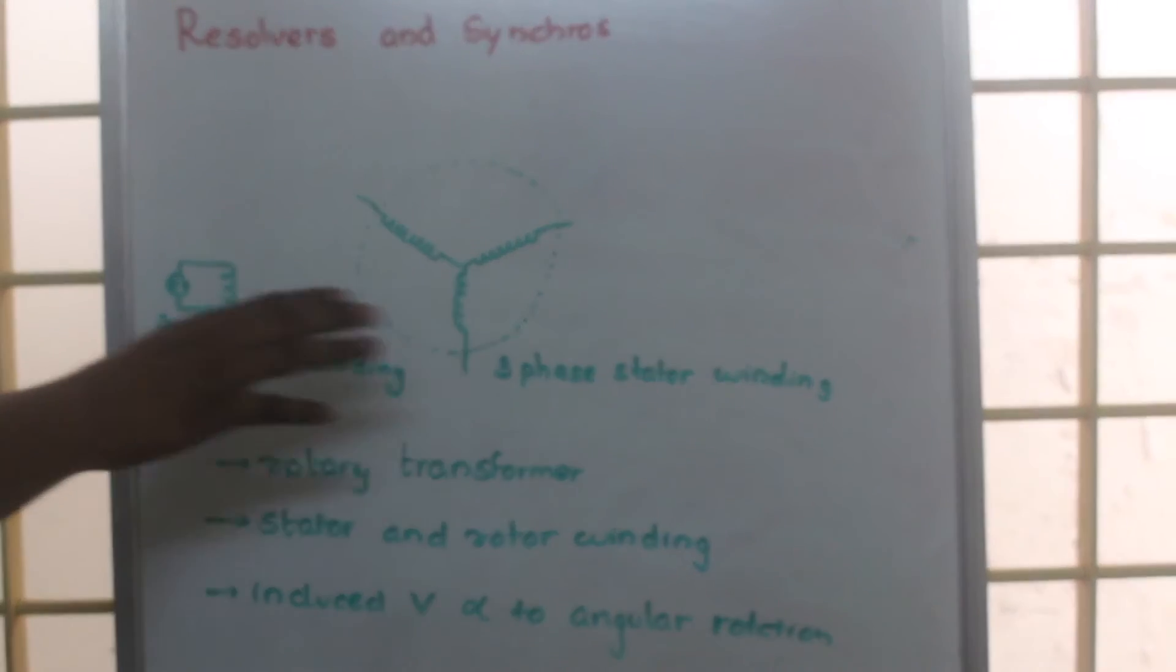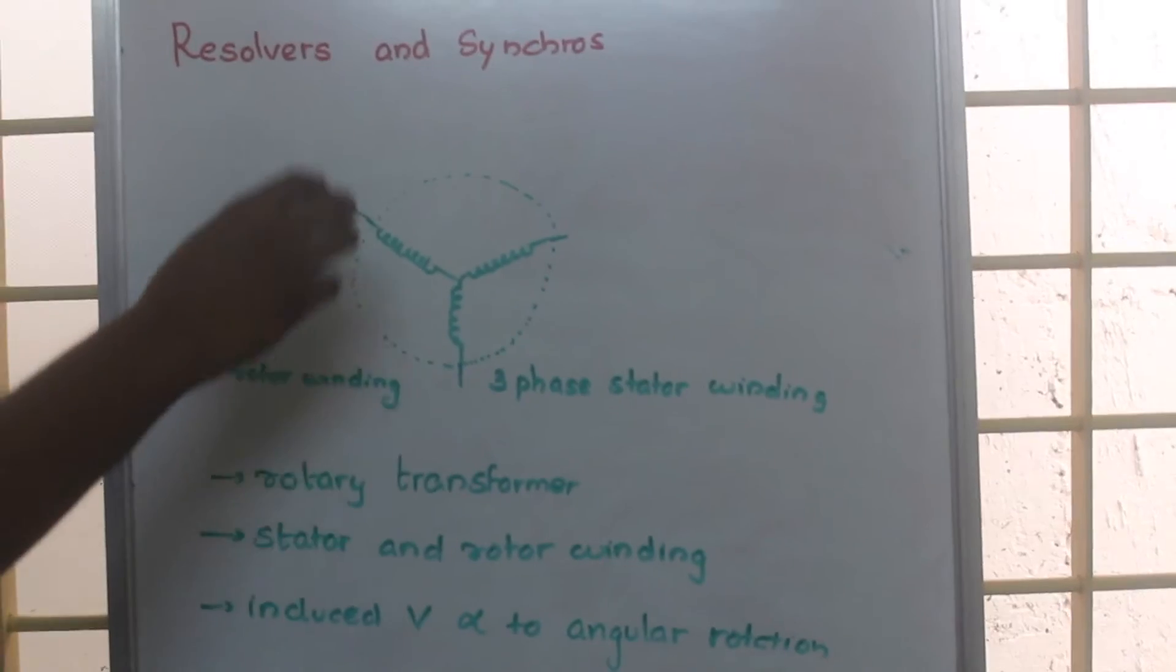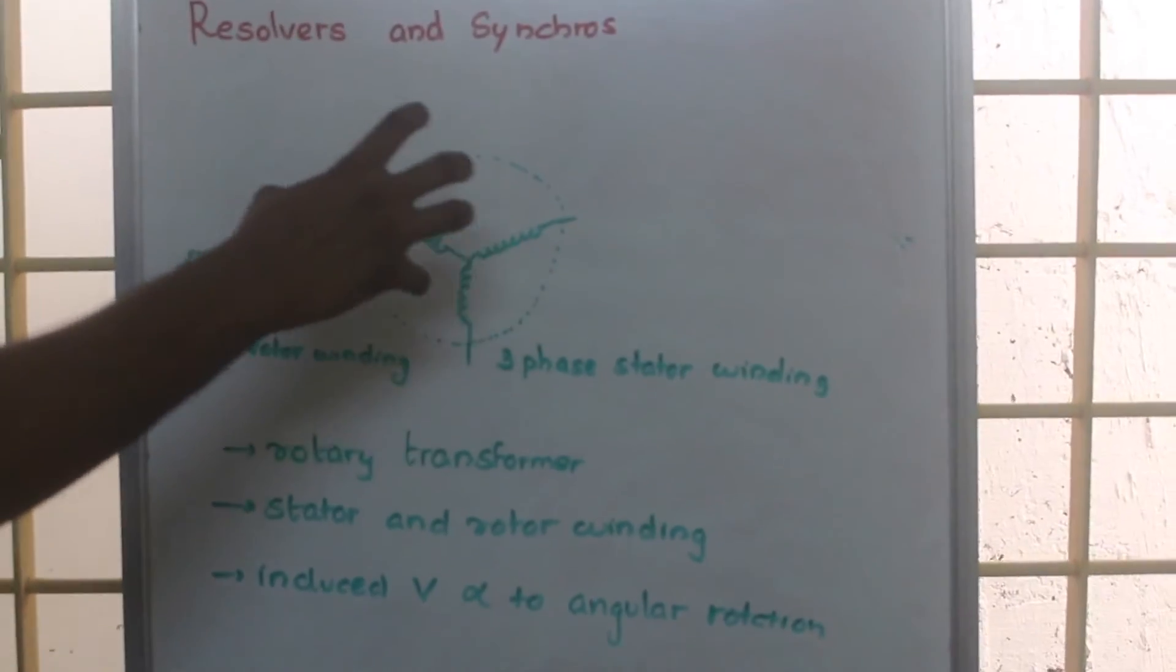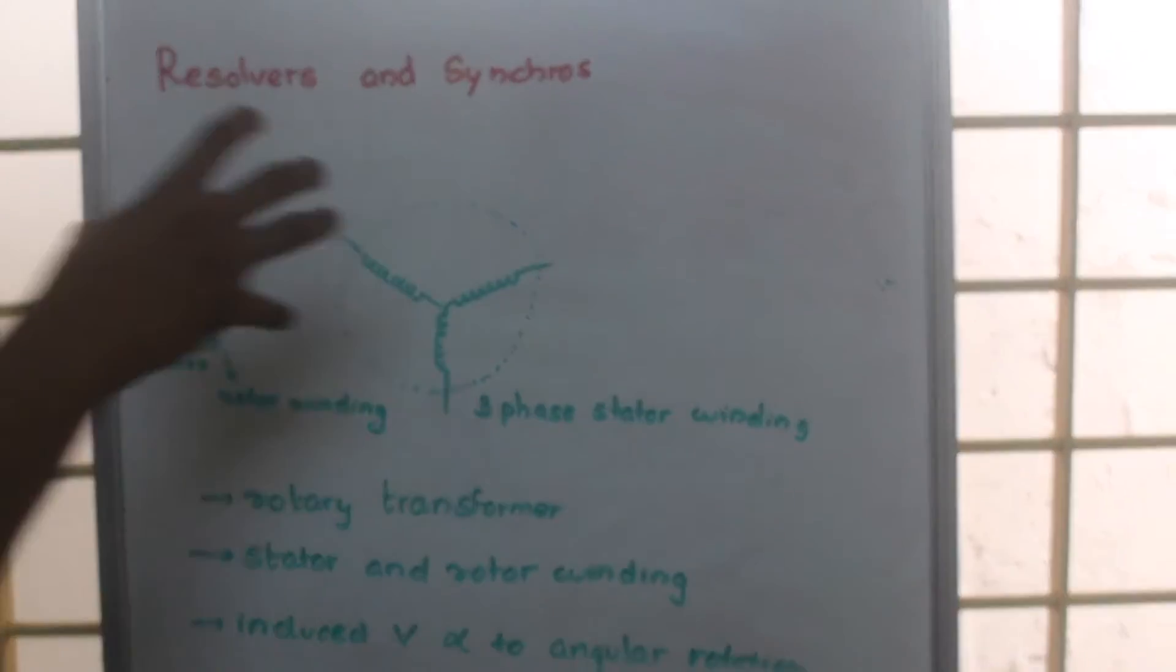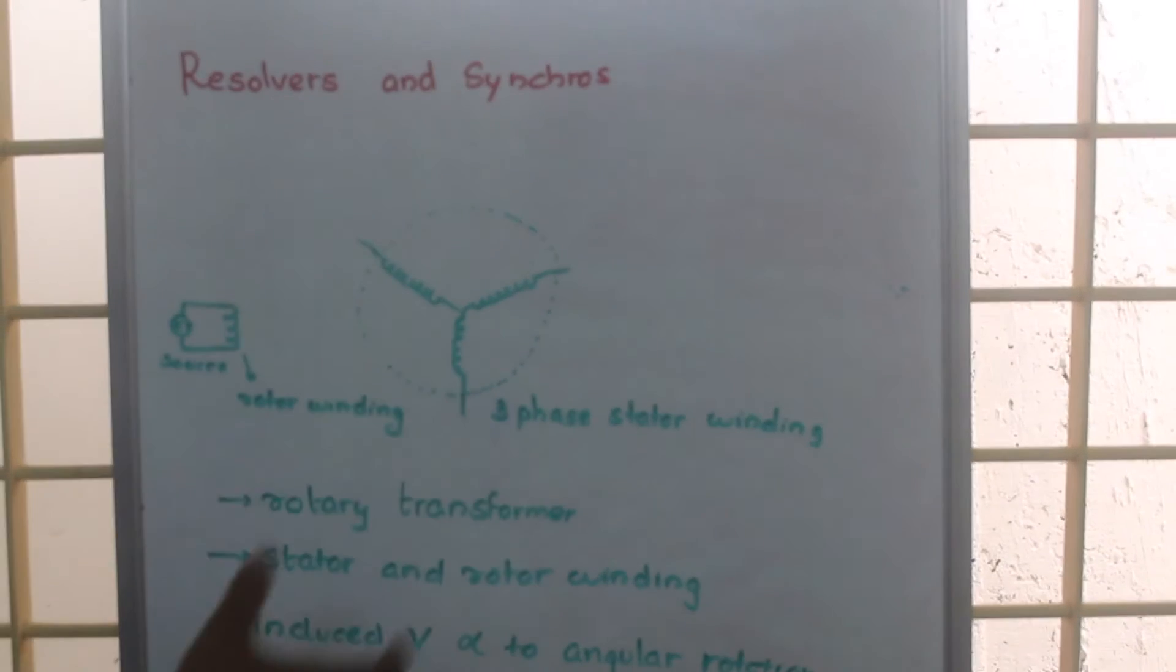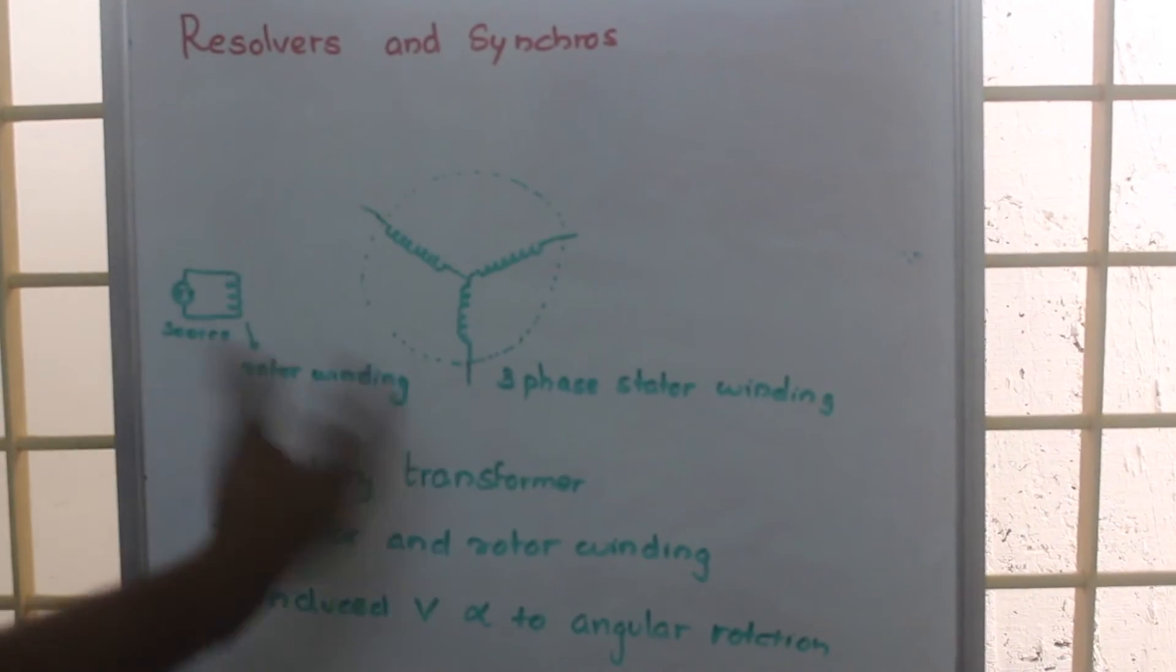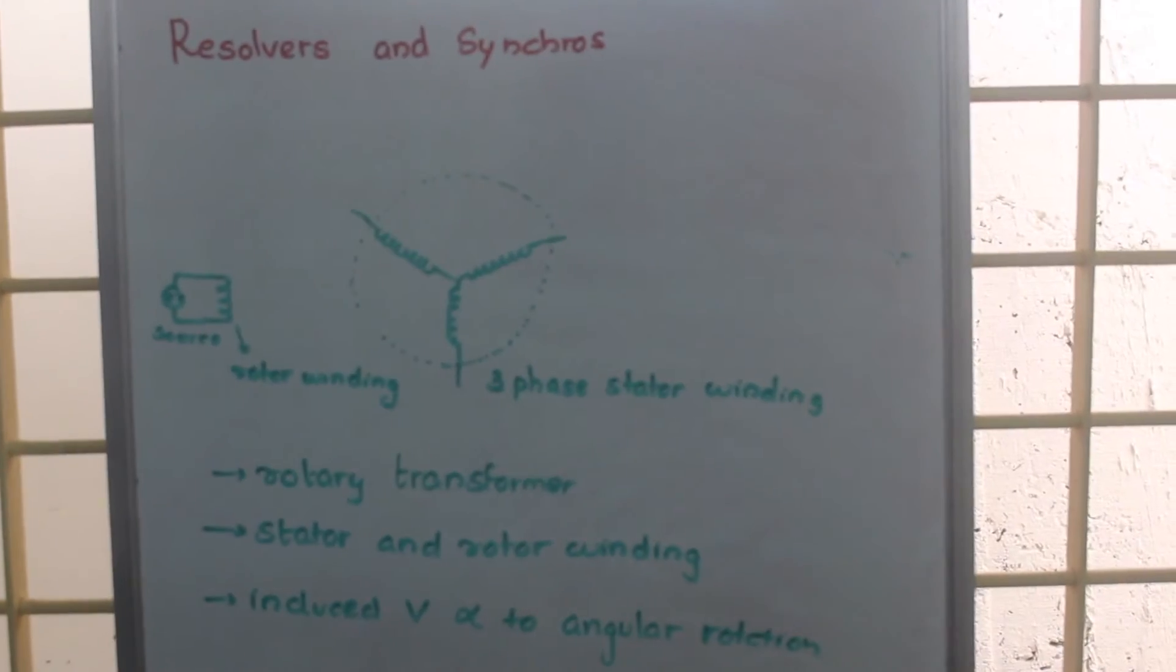Due to this transformer action, a voltage is created in the secondary winding and that voltage is calibrated to find the angular displacement or angular rotation.